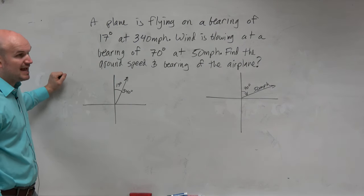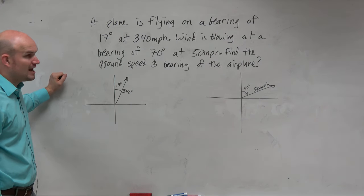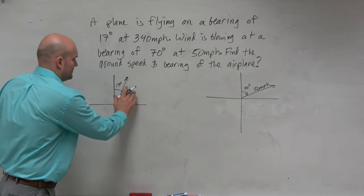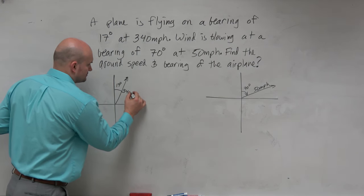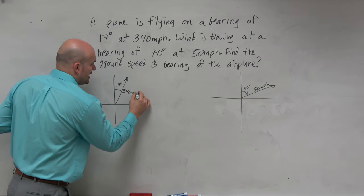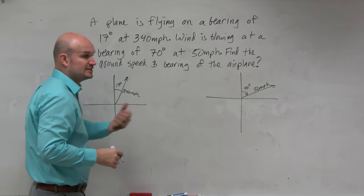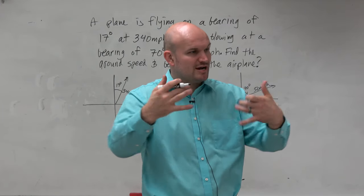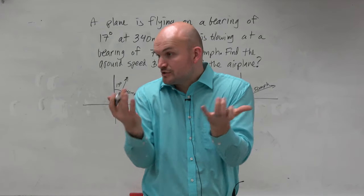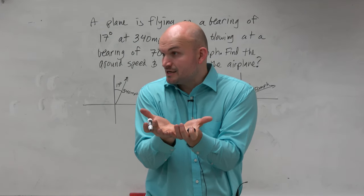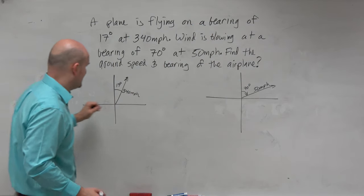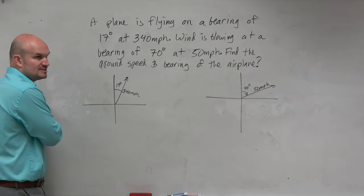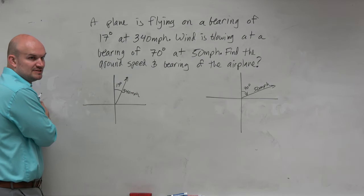Do we have an angle and a magnitude? Our miles per hour is going to represent our magnitude. We're not traveling at a rate, so we just use the rate as our magnitude. And then we use our angle — do we want to use cosine of 17 degrees, sine of 17 degrees? No. We have to use our standard form in our calculator.